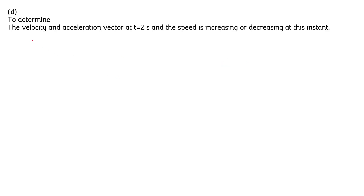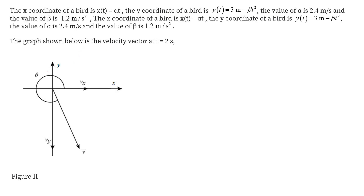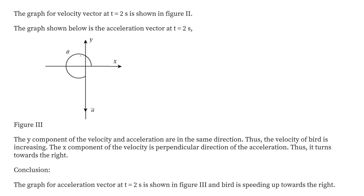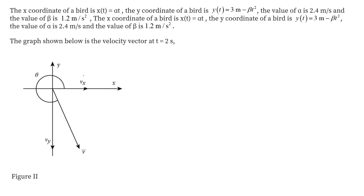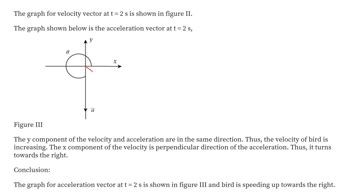At t=2 seconds, the velocity vector points in the direction shown in the figure and the acceleration vector points downward. We can see that the bird is increasing its speed toward the right in this direction, as shown in the figure.